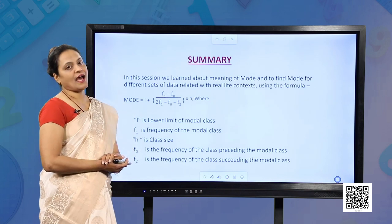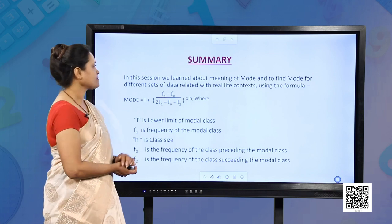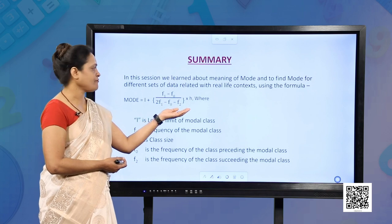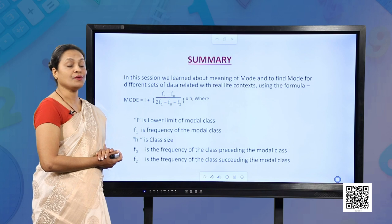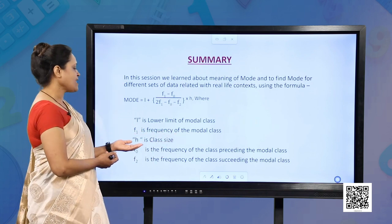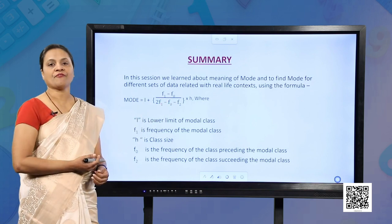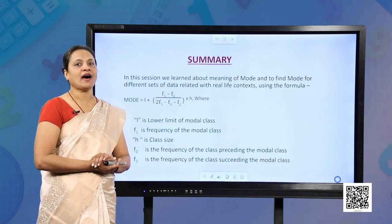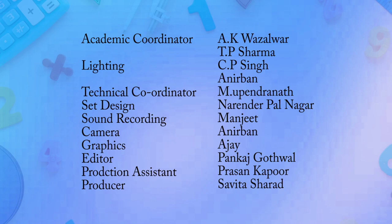In this session, we understood what mode means and how to calculate mode in different representations of data. The formula for mode is: Mode = L + [(F1 − F0) / (2F1 − F0 − F2)] × H, where L is the lower limit of the modal class, F1 is the frequency of the modal class, H is the class size (upper limit − lower limit), F0 is the frequency of the class preceding the modal class, and F2 is the frequency of the class succeeding the modal class. I hope you have understood the concept of mode. Thank you so much.